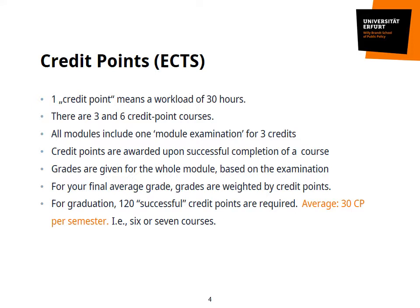As we go through the modules and courses, you will see that they are assigned different numbers of so-called credit points. Each credit point stands for a workload of roughly 30 hours per semester. There are three and six credit point courses. All modules on top of the courses include one module examination for three credits. Credit points are awarded upon successful completion of a course. Grades are given for the whole module based on the one examination. For your final average grade, grades are weighted by credit points. That means that grades of nine credit point modules count relatively more to your final average as compared to six credit point modules.